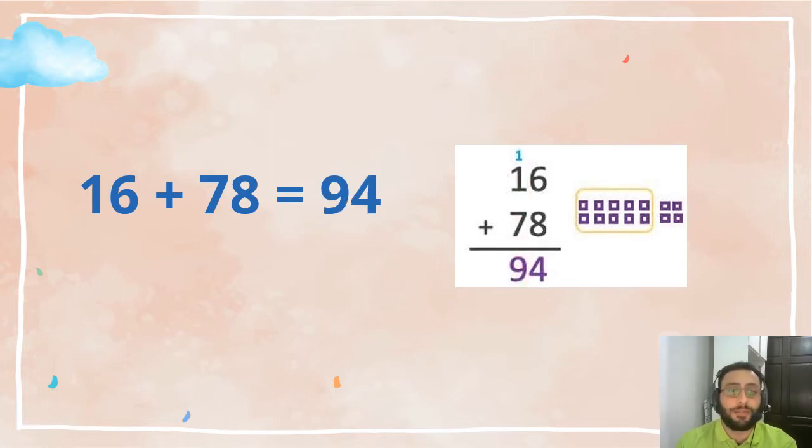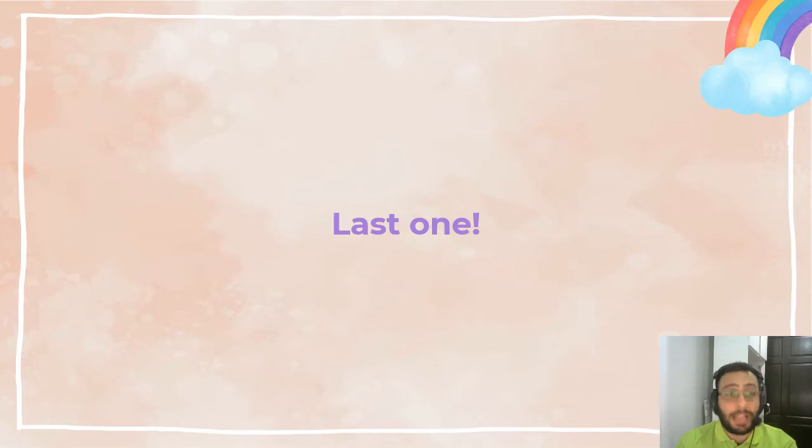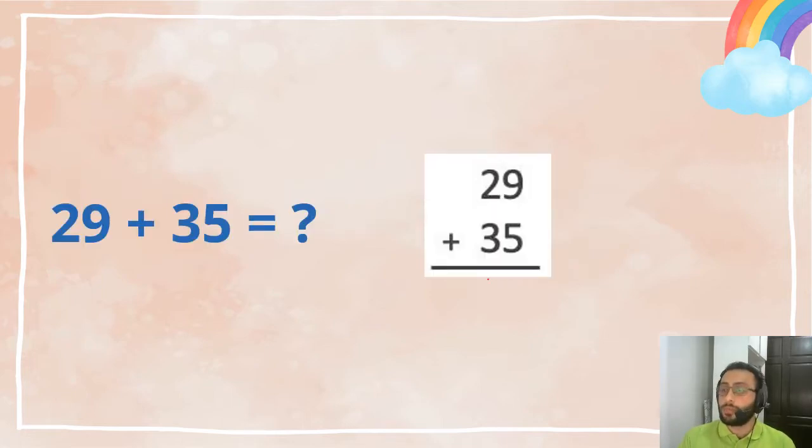So let's do the last one: 29 plus 35. Now 9 plus 5 is 14, right? So I cannot write 14 here. I cannot do like this. So what do I do? I remove this because that's wrong. Instead, I write 4 here—14, right? So we keep the 1 up here. See, this is the 10 ones that we regrouped.